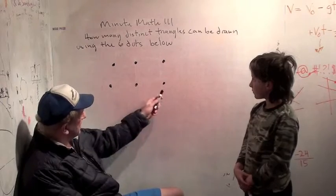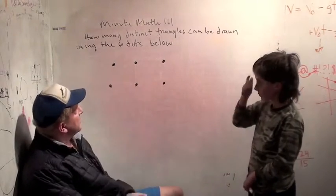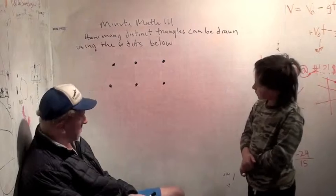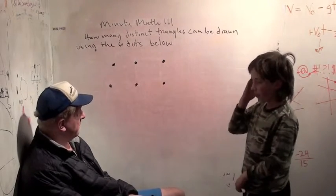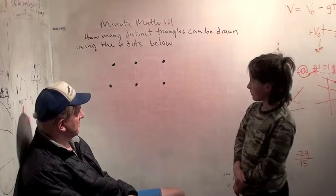And the question is, I have these six dots. How many distinct triangles can be drawn using the six dots below? Okay? Do you understand the problem? Yeah. Okay, how do you think you want to proceed on this one?